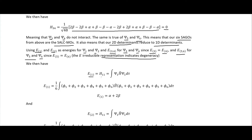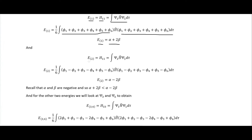For E₍₁₎ = H₁₁, substituting in the SAGOs gives E₁ = α + 2β. For E₍₂₎ = H₂₂ we get E₂ = α − 2β. Recall that both α and β are negative, so α + 2β is actually lower in energy than α − 2β, because subtracting a negative number means addition, making α − 2β larger.